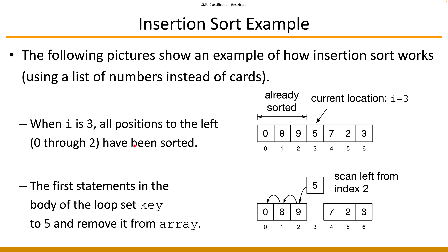Here is a more detailed example to illustrate how the algorithm works, following Python's notation. Let's say i equals three, which means we are processing element five at the moment. Everything to the left, from index zero to two, is already sorted; everything to the right is waiting to be processed.